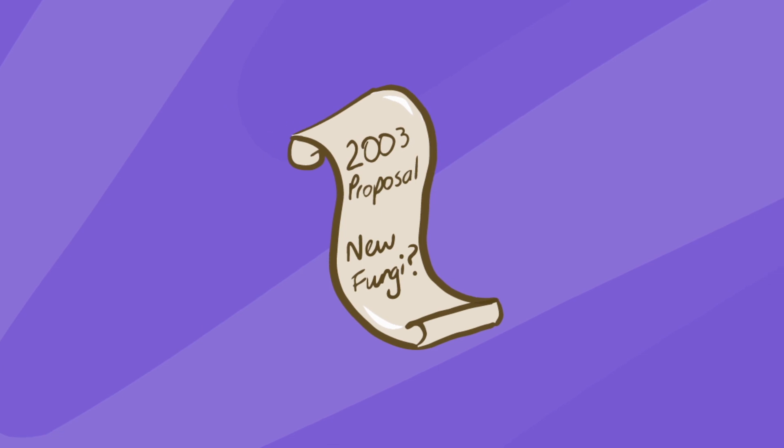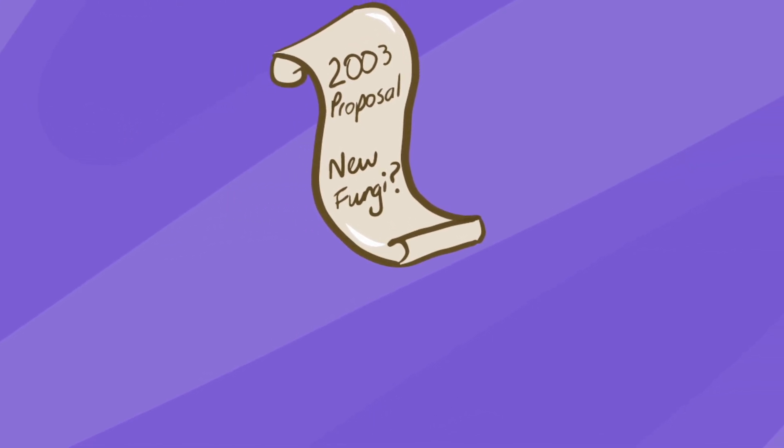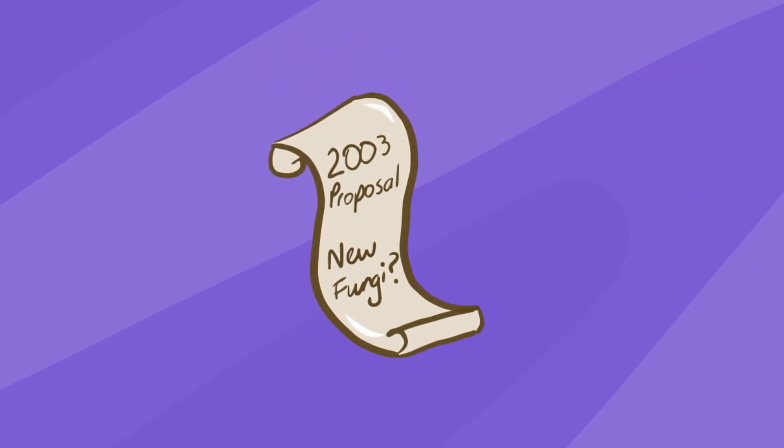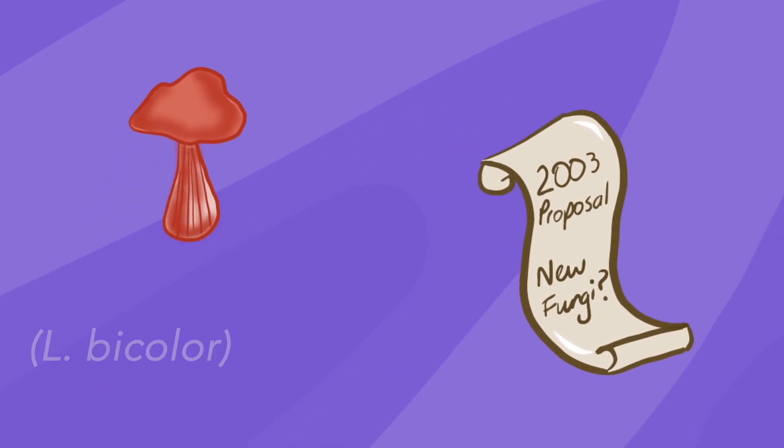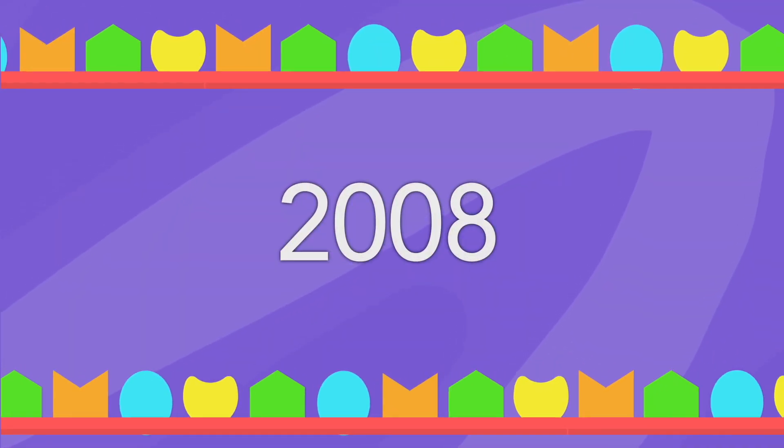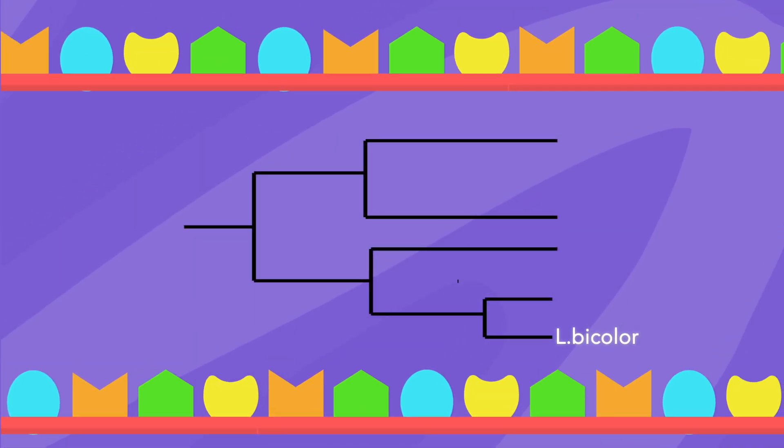Scientists knew that another organism would be needed to discover more about the fungi kingdom. In 2003, a proposal by the ectomycorrhizal community to the Energy Joint Genome Institute to genetically sequence a new fungus called the Laccaria bicolor was approved. It wasn't until 2008 that some evolutionary information was discovered.